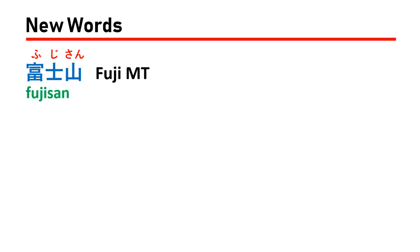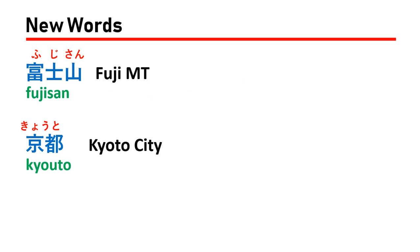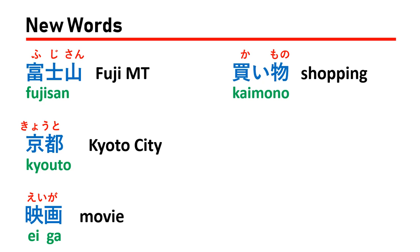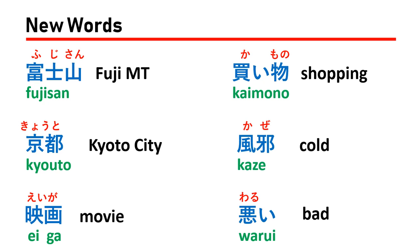The vocabulary words introduced are: Fujisan (富士山), which means Fuji Mountain or Mt. Fuji; Kyoto (京都), which means Kyoto city; Eiga (映画), which means movie; Kaimono (買い物), which means shopping; Kaze (風), which means wind or cold; and Warui (悪い), which means bad or worse.